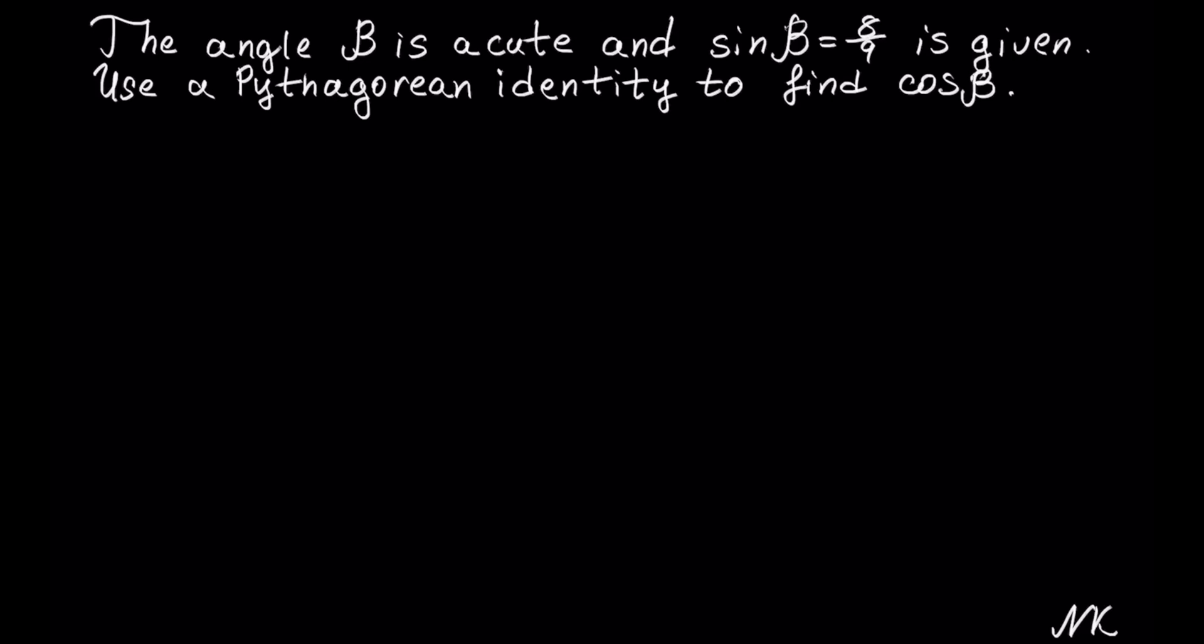Hello, in this problem we have that the angle β is acute and sin β is equal to 8 out of 9, and we have to use a Pythagorean identity to find cos β.